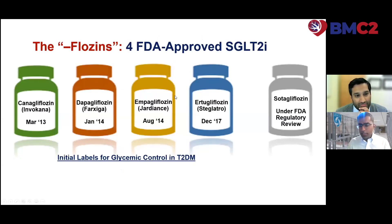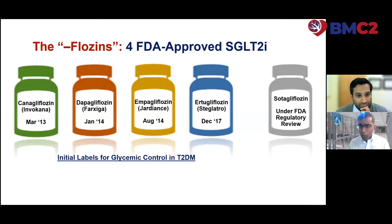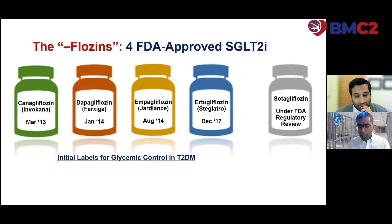The SGLT2 inhibitors all end in 'flozin.' There were four initial FDA-approved SGLT2 inhibitors, all approved for glycemic control in type 2 diabetes. They're not necessarily new or novel — they were introduced in 2013 in the United States. There's a fifth one called sotagliflozin, a combination SGLT1-2 inhibitor currently under regulatory review by the FDA.